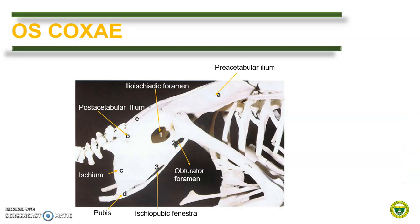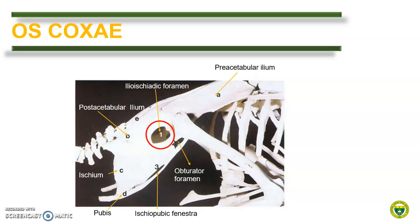The bird's pelvic bone is comparatively different from its mammalian counterpart. It is also composed of the ilium, ischium, and pubis. The ilium is the biggest and is divided into pre-acetabular ilium and post-acetabular ilium, based on the location of the acetabulum. There are two openings: the smaller is the obturator foramen, which is the same as in mammals, and the bigger is the ischio-ischiatic foramen between the ilium and the ischium. This foramen transmits the sciatic nerve. The pubis is long and separated from the ischium by the ischiopubic fenestra.